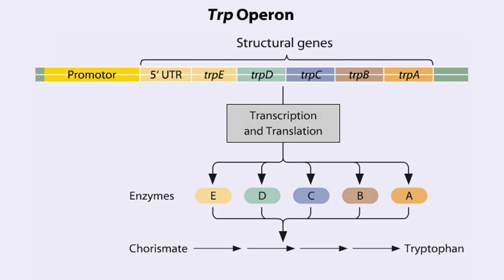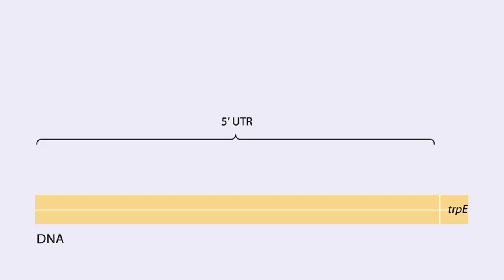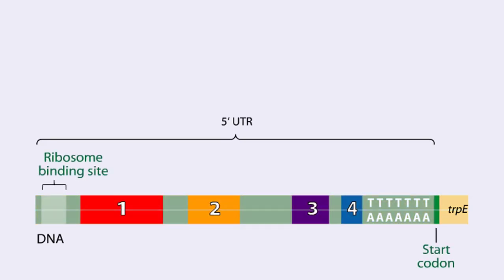The TrpE gene contains a five-prime untranslated region, or UTR, that plays an important role in the regulatory mechanism called attenuation. The five-prime UTR contains four regions. Region 1 encodes a short peptide containing tryptophan amino acids.